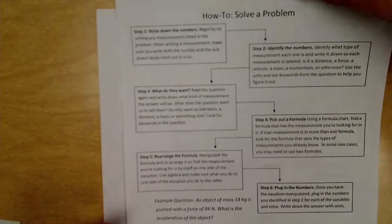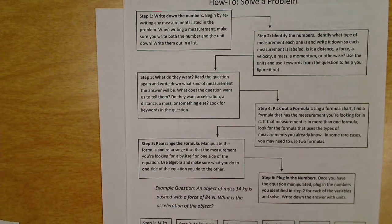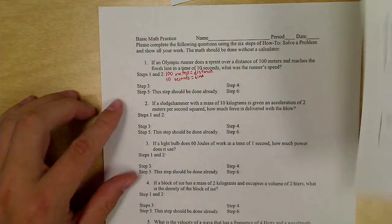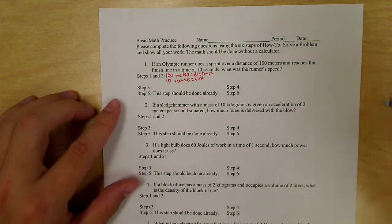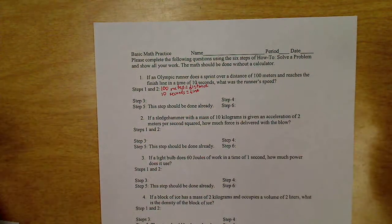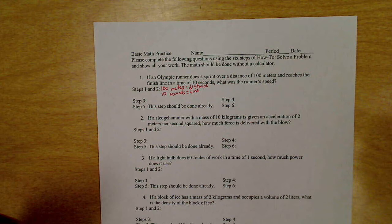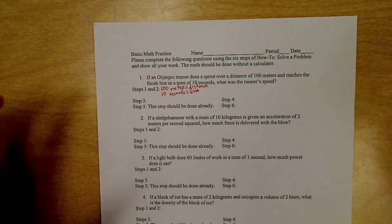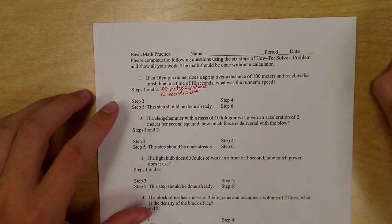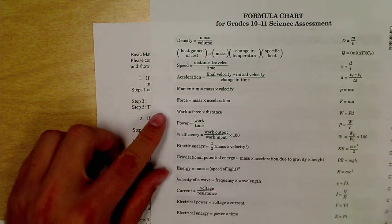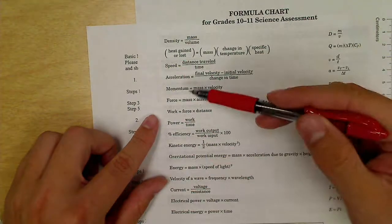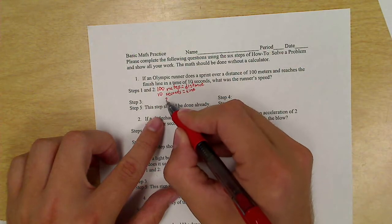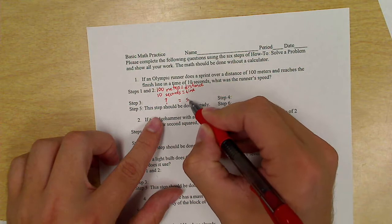Step three. Step three asks me, what do they want? Sometimes step three is extremely easy. Sometimes it's trickier. So when we look at the problem, what was the runner's speed? That's pretty straightforward. They want to know the speed. Sometimes they'll ask a little different. They might ask how fast was the runner going. Well, then we'd have to look how fast. That's a keyword for speed. This time, they're straight up. Just like step two, step three, what are they looking for? It's multiple choice. It's one of these. They're looking for something on the formula chart. So step three, the question is speed.